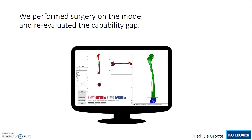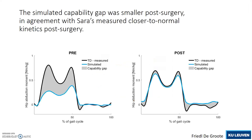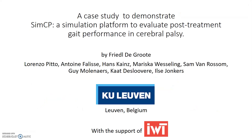We then performed surgery on the model and re-evaluated the capability gap assuming an altered motor control. The capability gap decreased, in agreement with Sarah's closer to normal kinetics post-surgery.